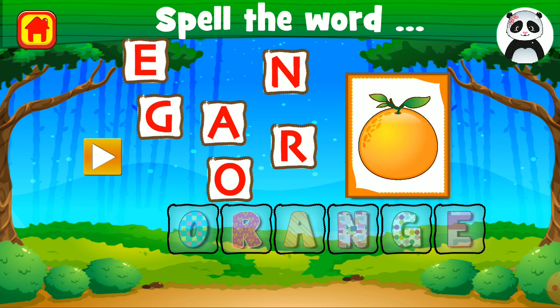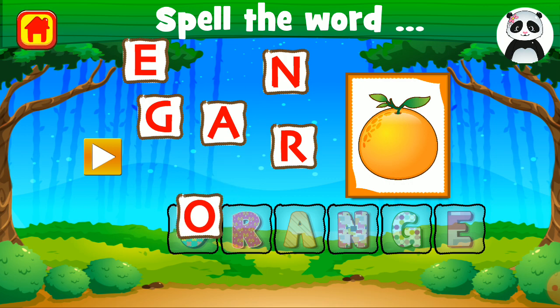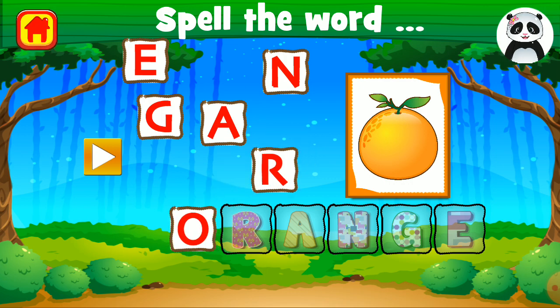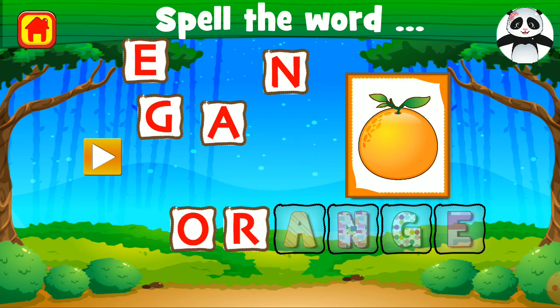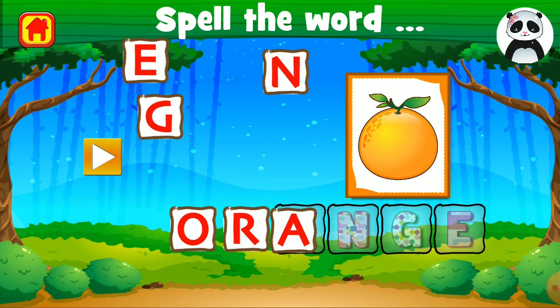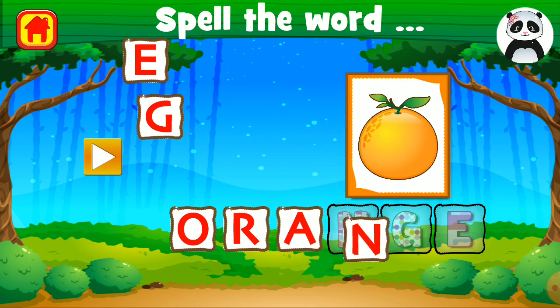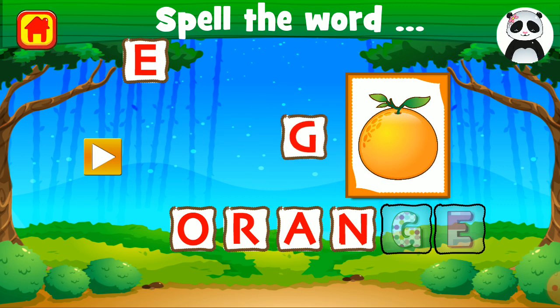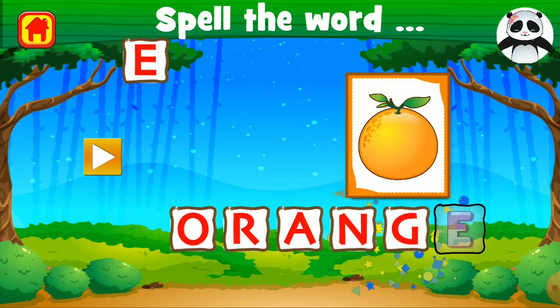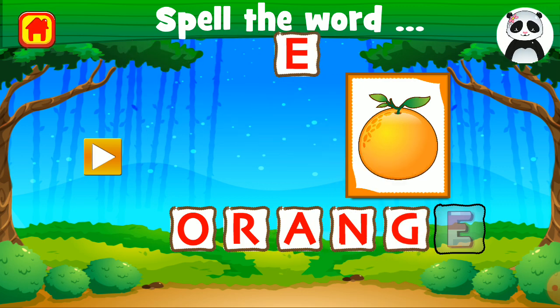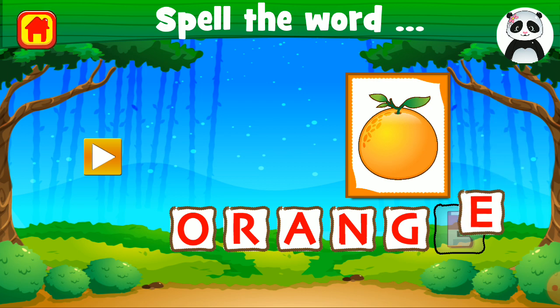Spell the word orange. O, R, A, N, G, E — orange.